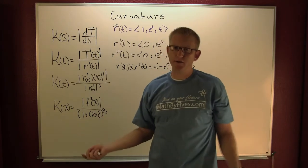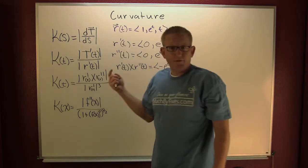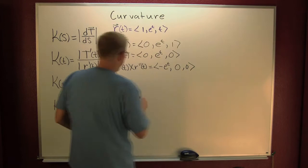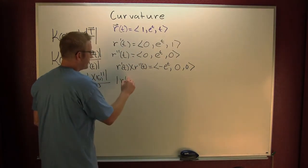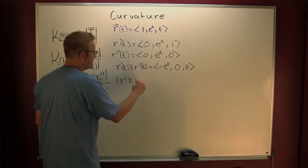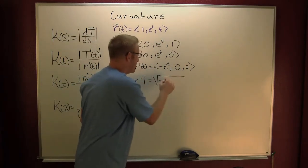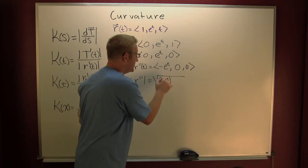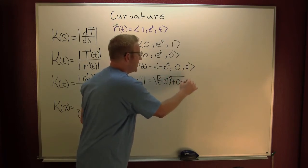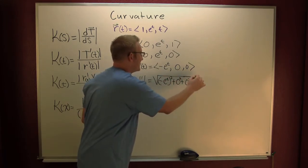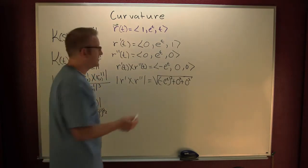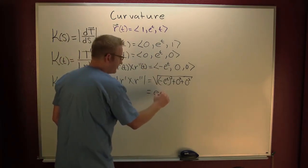So now what I want to do from there is I want to find the magnitude. And I find the magnitude of the first cross the second. And that's going to be the square root of minus e to the t squared plus zero plus zero plus zero. Both of those squares, of course. After the dust settles, we find this to be e to the t.